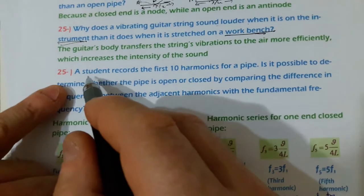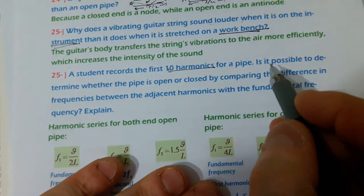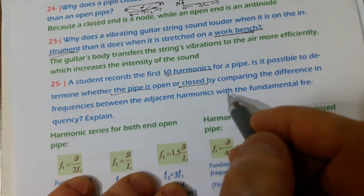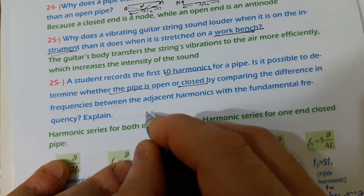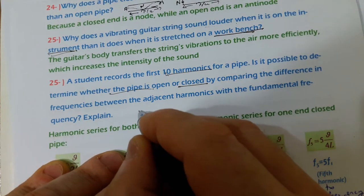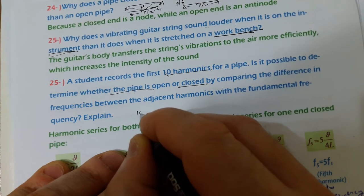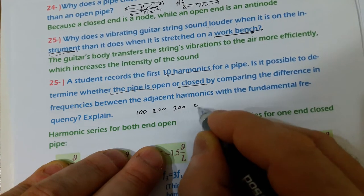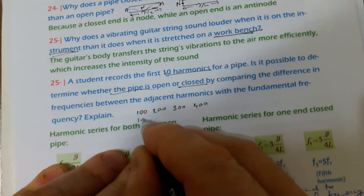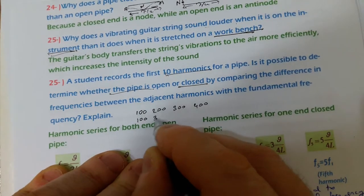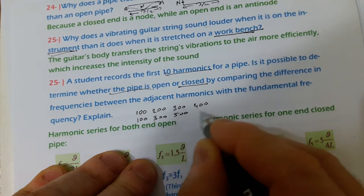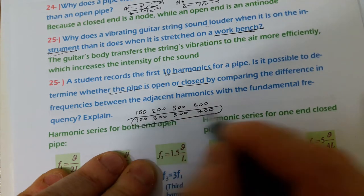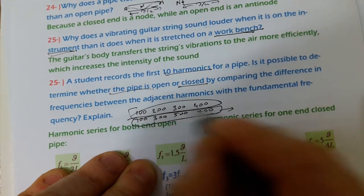Question number twenty-five: a student records the first ten harmonics for a pipe. Is it possible to determine whether the pipe is open or closed? Yes. In an open-end pipe, all harmonics are present (e.g., 100, 200, 300, 400, 500 Hz...). In a closed-at-one-end pipe, only odd harmonics are present (e.g., 100, 300, 500, 700 Hz...). By examining this series of harmonics, you can determine whether the pipe is closed at one end or open at both ends.